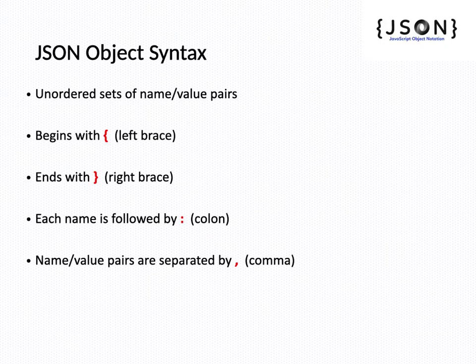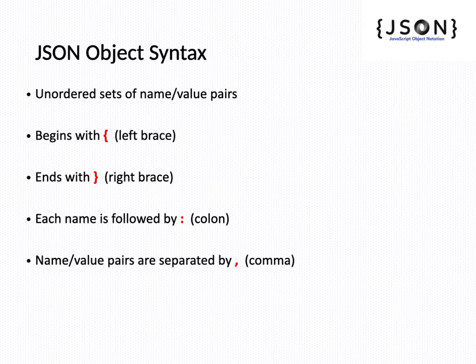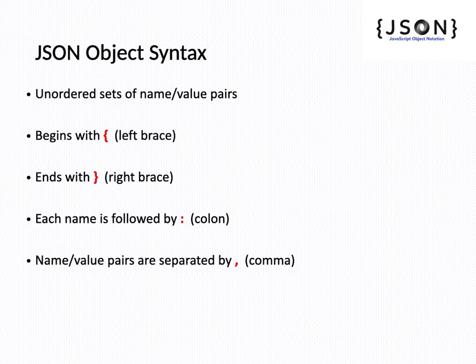Now we will see JSON object syntax. JSON is a collection of an unordered set of name-value pairs. Name and values are paired together. They begin with a left brace and end with a right brace — the name-value pairs are enclosed in curly brackets. Each name is followed by a colon, and name-value pairs are separated by commas.